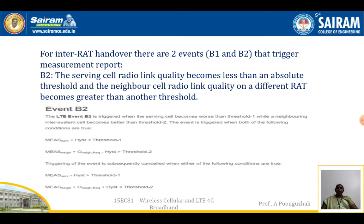Event B2 is triggered when both the following conditions are true: the measurement of the serving node plus hysteresis is less than threshold 1, and the measurement of the neighboring cell plus neighboring frequency minus hysteresis is greater than threshold 2. The handover will get cancelled when the measurement of the serving cell minus hysteresis is greater than threshold 1, or the measurement of the neighboring cell plus frequency plus hysteresis is less than threshold 2.